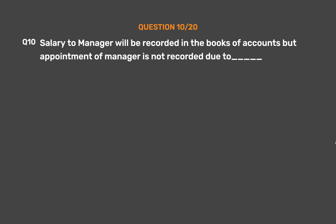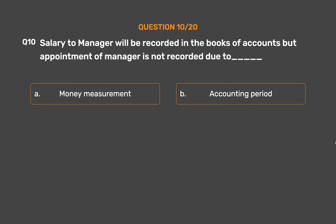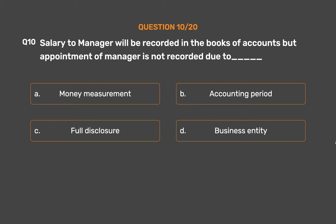Question No. 10: Salary to a manager will be recorded in the books of accounts but appointment of a manager is not recorded due to which principle? Option A: Money Measurement. Option B: Accounting Period. Option C: Full Disclosure. Option D: Business Entity.